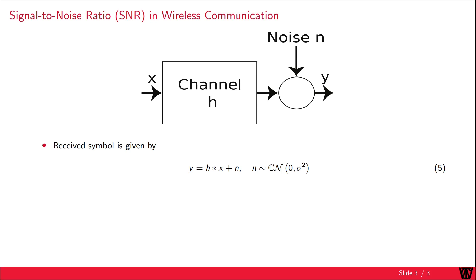Thus the received symbol Y is given by the channel convoluted with the transmit symbol X plus the additive white Gaussian noise.